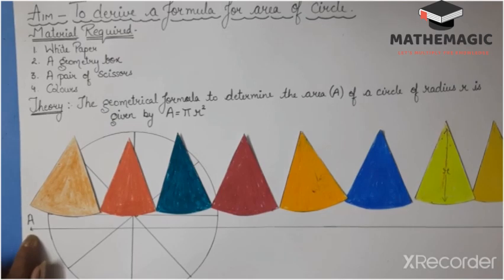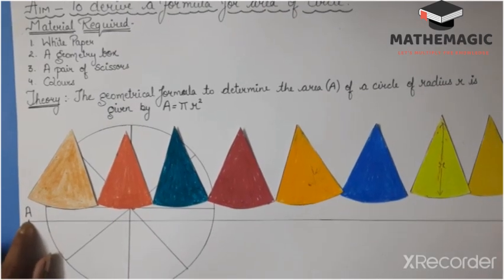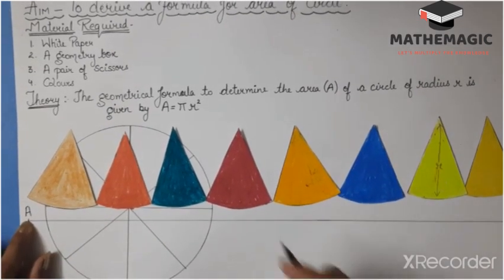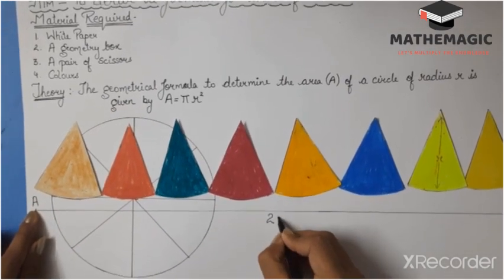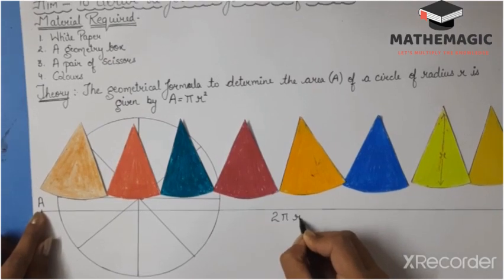From this to this end, that is from point A to point B, this length is actually equal to the circumference of the circle, that is 2πr.